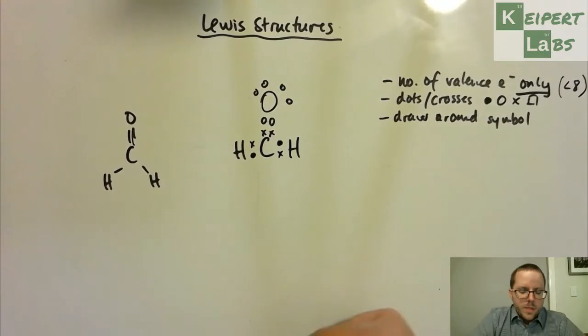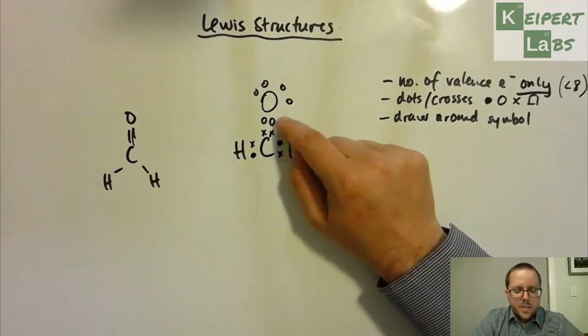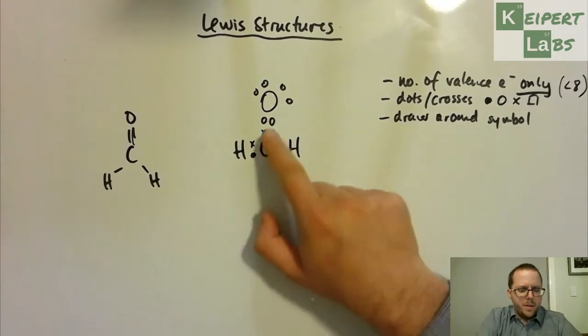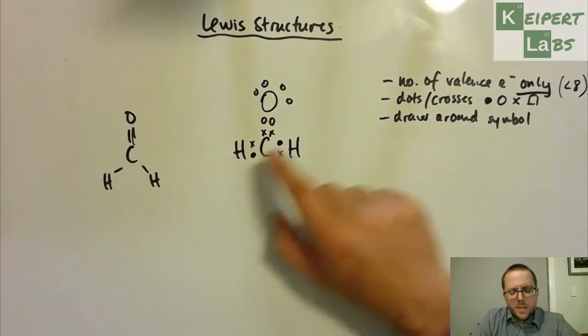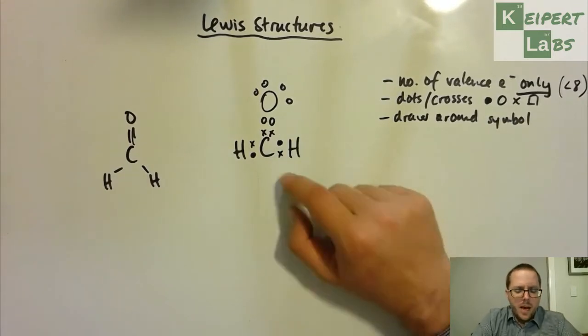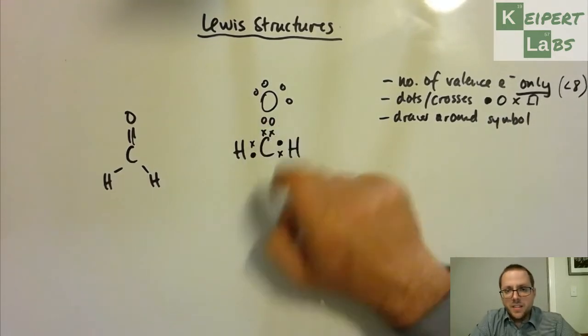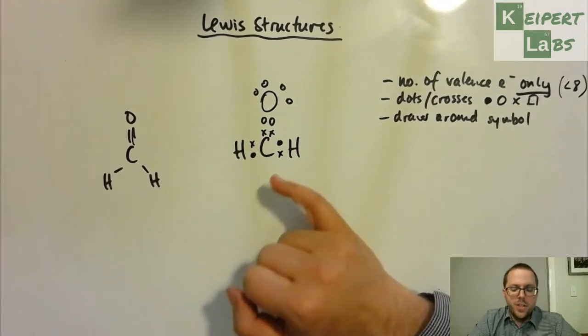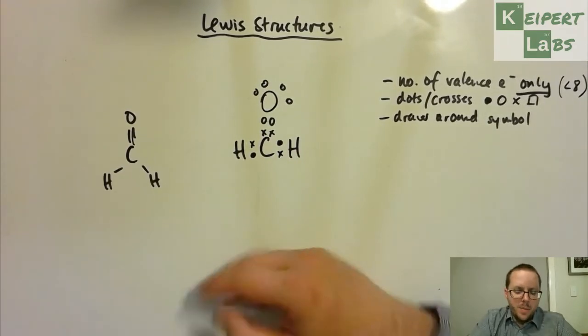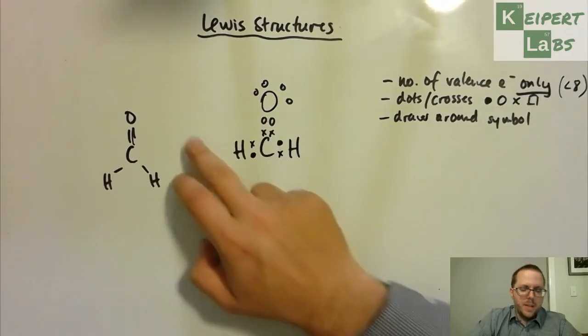So each of these connections, so each of these shares, it matches up with one of the lines in our original type of drawing. But it helps us to be able to explain how these connections exist by sharing these electrons between atoms so that, and to achieve a full valence shell, this type of drawing allows us to visualize it better.